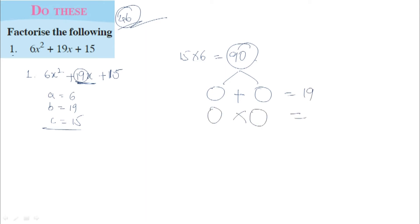When we add the two terms, we should get the middle term B, which is 19. And when we multiply the two terms, the product should be AC, which is 90.